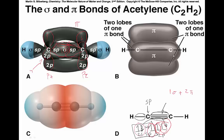Here's a better picture that shows the pi bonds. Up here, circled in red, is one lobe of one pi bond — top and bottom makes one pi bond. Then front and back is our second pi bond. So we have two pi bonds even though each pi bond has two lobes. A triple bond is made up of one sigma bond plus two pi bonds. Here's a ball-and-stick model and surface drawing of what that molecule looks like.